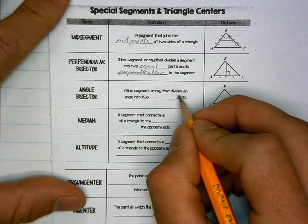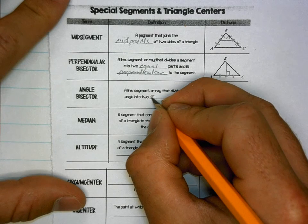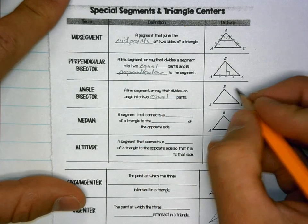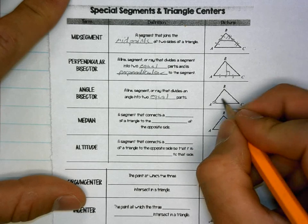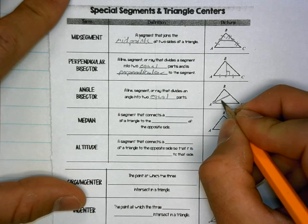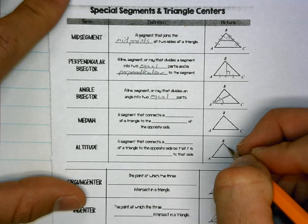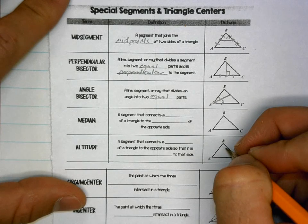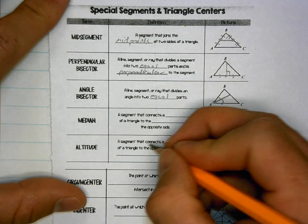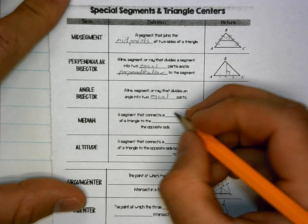Angle bisector: a line segment or ray that divides an angle into two equal parts. You start at the vertex of one of the sides and draw a line that cuts the angle into two equal parts.